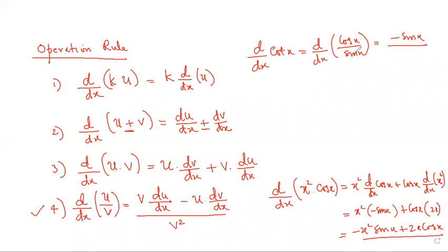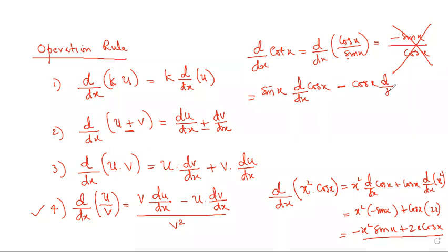Writing derivative of the numerator over the denominator directly is totally wrong. Start from the denominator times derivative of the numerator, minus the numerator into derivative of the denominator, all divided by the square of the denominator.